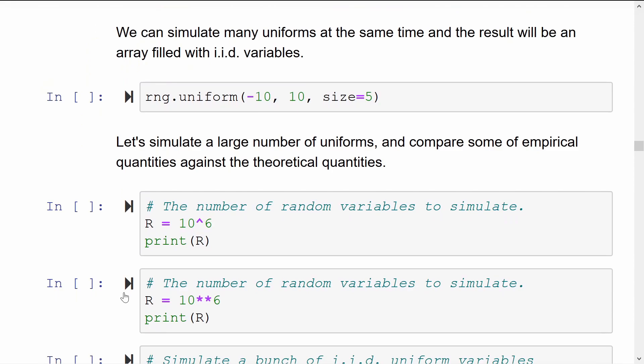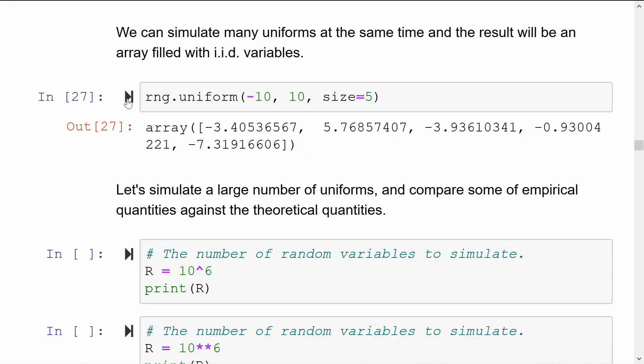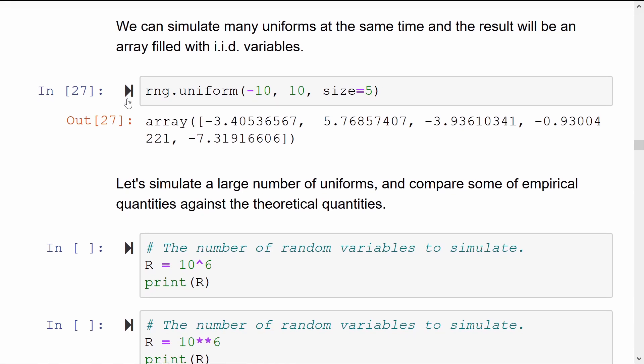As I mentioned before, if you want to generate many at the same time, you throw in the third argument for this function. Size equals five will give you five IID uniform random variables. It gives it back to you inside a NumPy array.